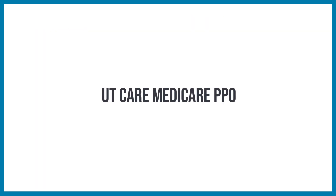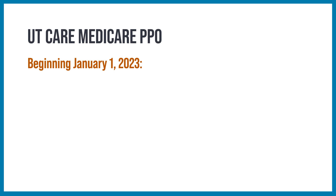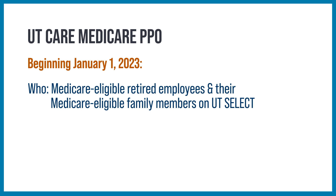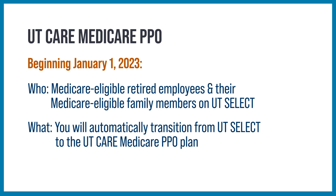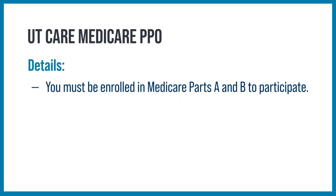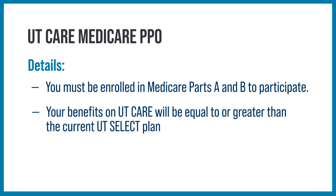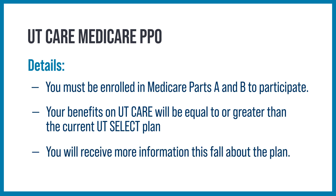UT Care Medicare PPO: Beginning January 1, 2023, Medicare-eligible retired employees and their Medicare-eligible family members enrolled in the UT Select plan will automatically transition to the UT Care Medicare PPO plan. You must be enrolled in Medicare Parts A and B to participate. Your benefits on UT Care will be equal to or greater than the current UT Select plan. You will receive more information this fall about the medical plan.